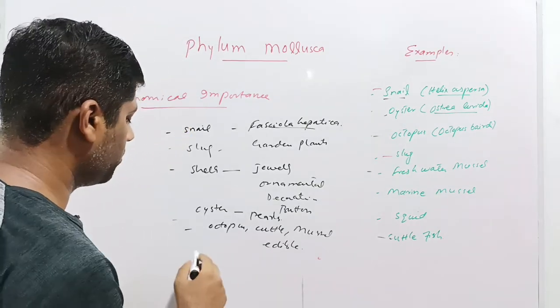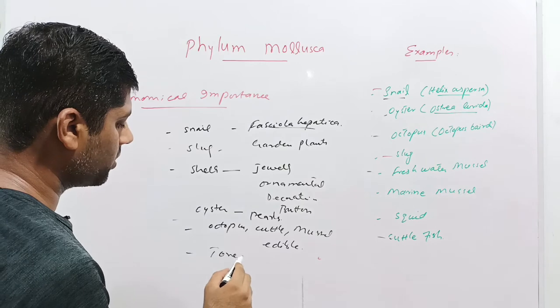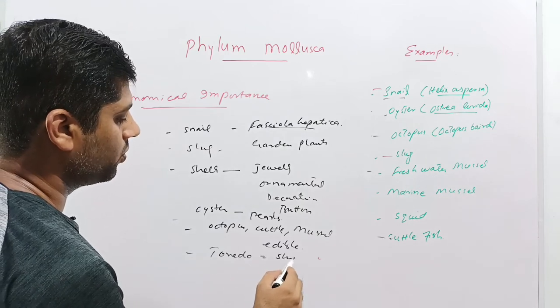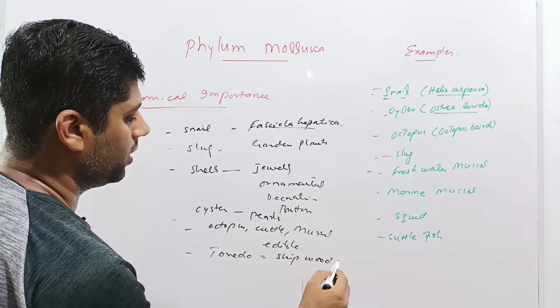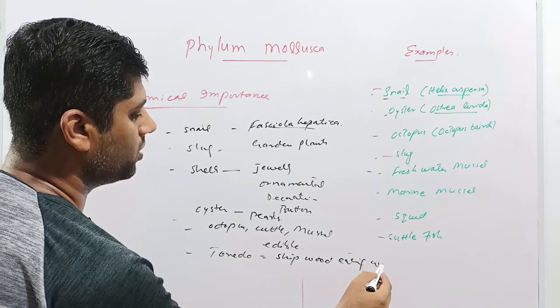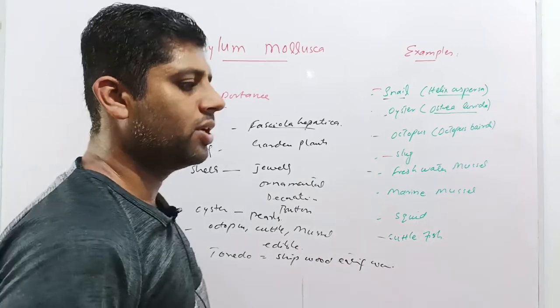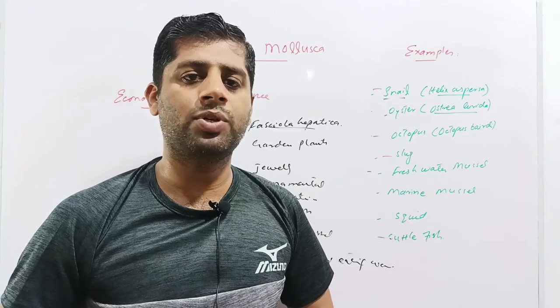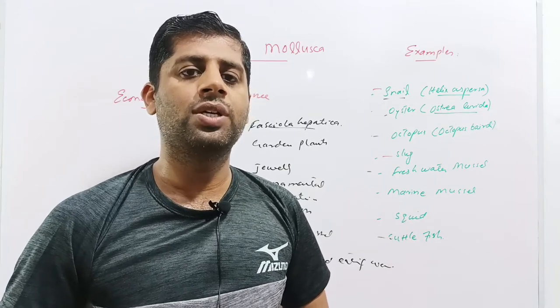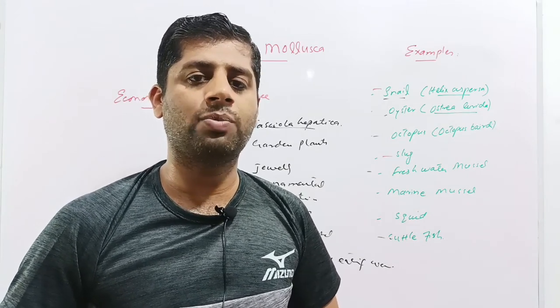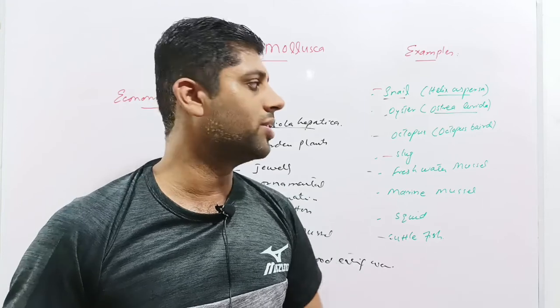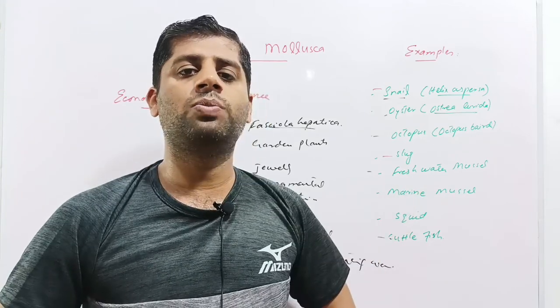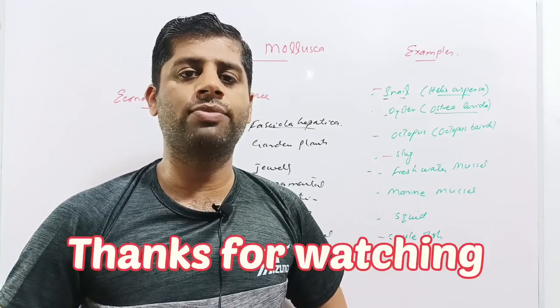And another member, the teredo, is called ship worm or ship wood eating worm. This is the worm present in the aquatic environment which eats away the ship wood, causing destruction and damage to the wood planks of the ship. So this was the economical importance of the phylum mollusca and general characteristics as well as the examples of phylum mollusca. Hope this lecture will bring you fruitful results. Thank you.